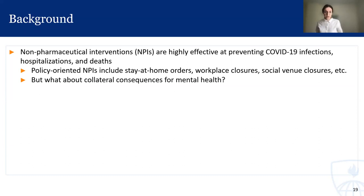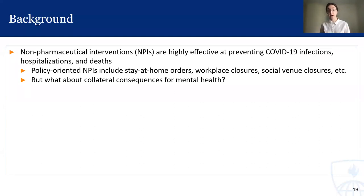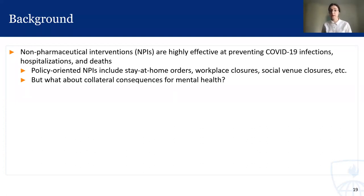We know from many studies across the pandemic that non-pharmaceutical interventions — which I'll refer to as NPIs throughout this presentation — are highly effective at preventing COVID-19 infections, hospitalizations, and deaths. Another name for NPIs is community mitigation strategies — basically any strategies or interventions that the government can implement that don't involve a pharmaceutical intervention. Some examples of these different policy-oriented NPIs could include things like stay-at-home orders, workplace closures, social venue closures, and limitations on the number of people who can come to a gathering. We know that these policies have been very effective at preventing the spread of COVID-19, but at the same time there have been concerns raised about possible collateral consequences for mental health as a result of isolation and not feeling connected to the people around you.